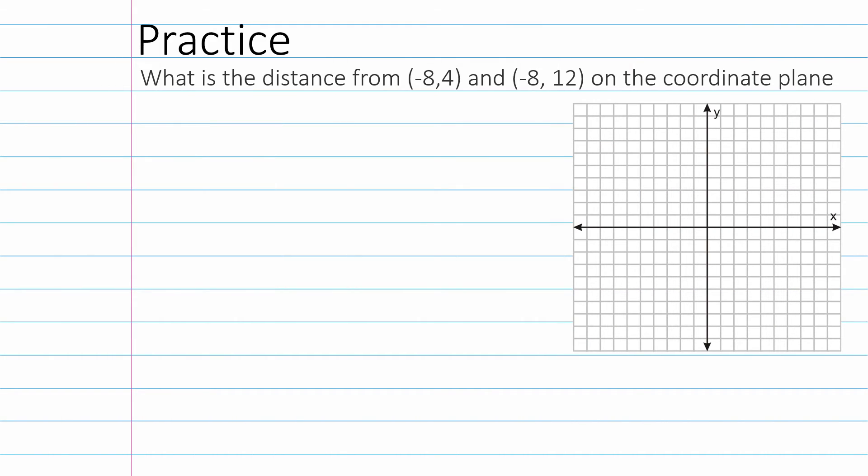All right. Let's go ahead and do another one. Let's do (-8, 4) and (-8, 12). I'm going to count by 2s here. So this is going to be negative 2, negative 4, negative 6. Well, that didn't quite work. Okay. I don't have to count by 2s. So we've got 1, 2, 3, 4, 5, 6, 7, 8. 1, 2, 3, 4. Okay. And then still negative 8, but this time it's going up to 12, which is going to be like up here. Okay. So again, it's just a vertical line. We could count, but we could also take the 4 and the 12 and just do 12 minus 4 and get 8.